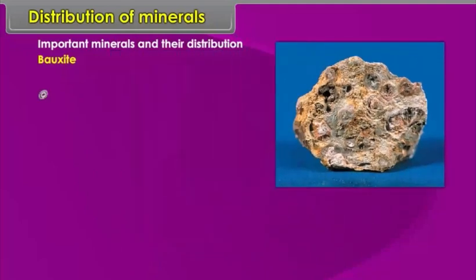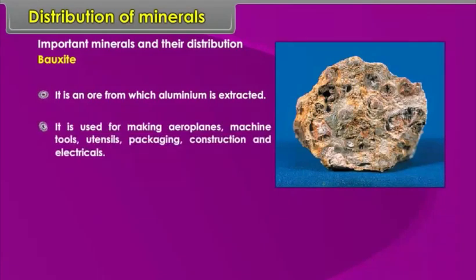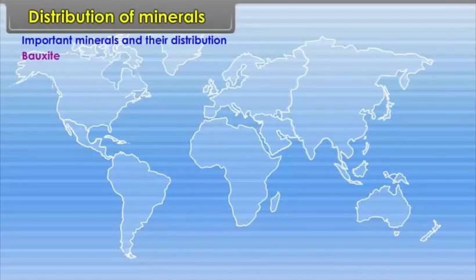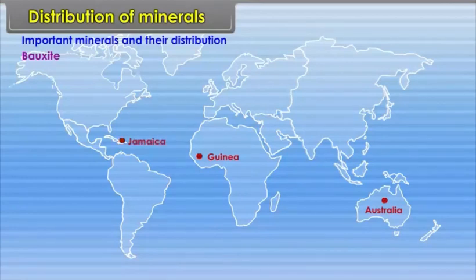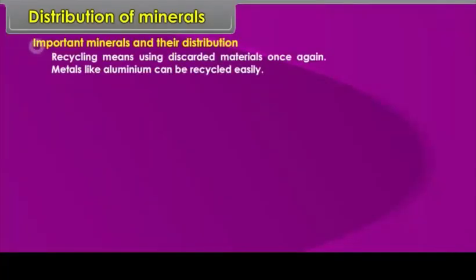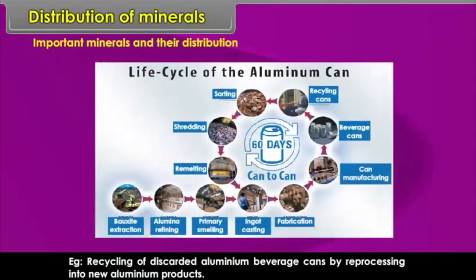Bauxite is used for making aeroplanes, machine tools, utensils, packaging, construction and electrical materials. It is found in Australia, Guinea, Jamaica and Brazil. Recycling means using discarded materials once again. Metals like aluminium can be recycled easily — for example, discarded aluminium beverage cans can be reprocessed into new aluminium products.